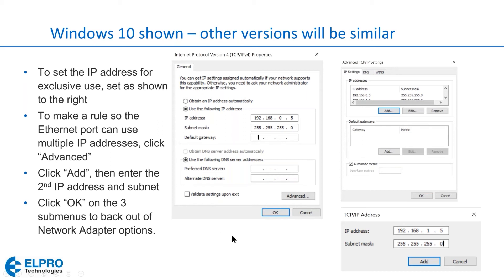To create a rule to switch between subnets without going back into network settings, click Advanced. In the advanced menu, click Add and type in a new IP address — for example, 192.168.1.5. Now you've got both 192.168.0.5 and 192.168.1.5, so you can access anything on either the .0 or .1 subnets. Enter the subnet mask as shown, click Add, and you'll see it appear in the list. You can add multiple IP addresses to your list. Then click OK three times to back out and complete the process.